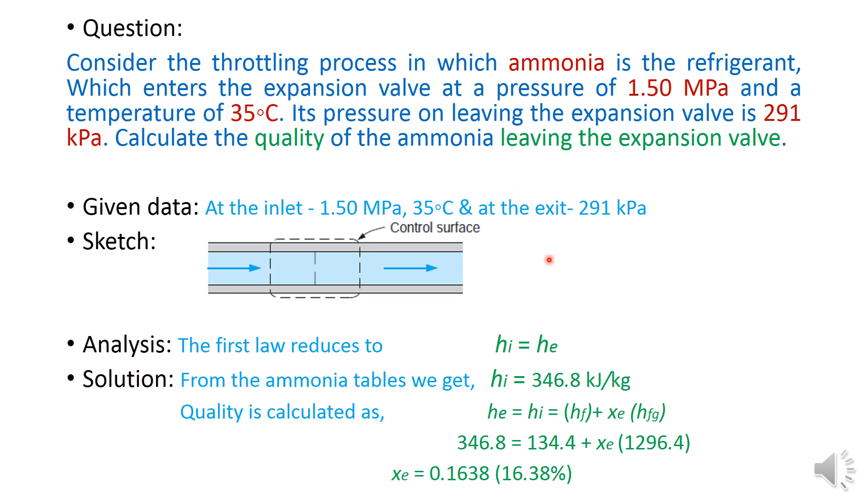Consider that, let me take you to an example. I will just read the statement. Consider the throttling process in which ammonia is the refrigerant, which enters the expansion valve at a pressure of 1.5 MPa and a temperature of 35 degrees Celsius. Its pressure on leaving the expansion valve is 291 kPa. Calculate the quality of ammonia leaving the expansion valve.